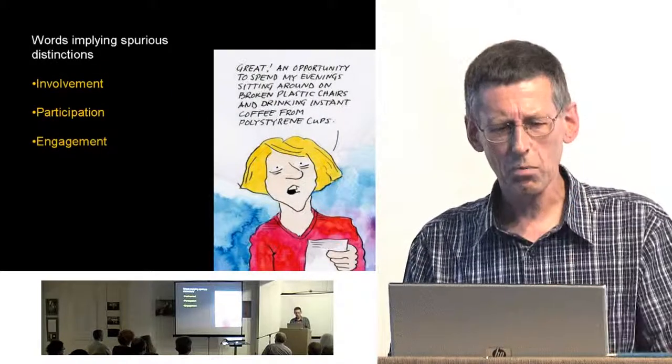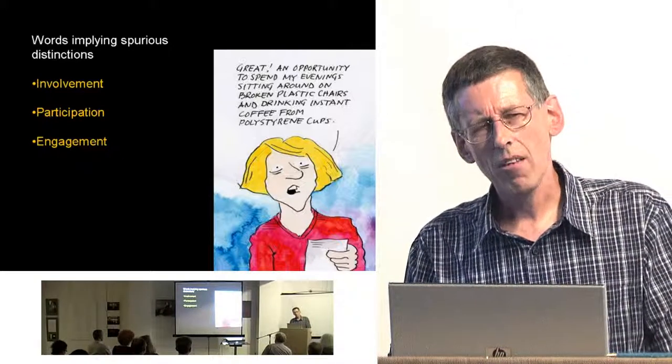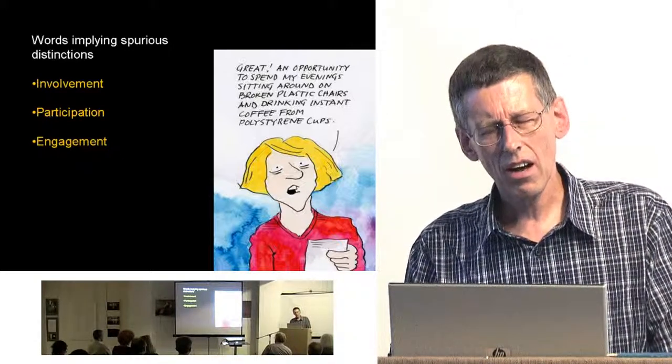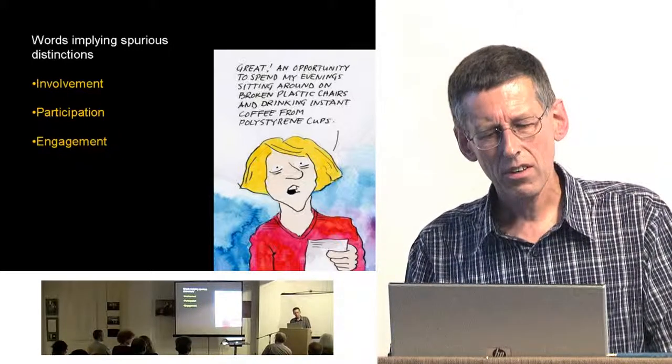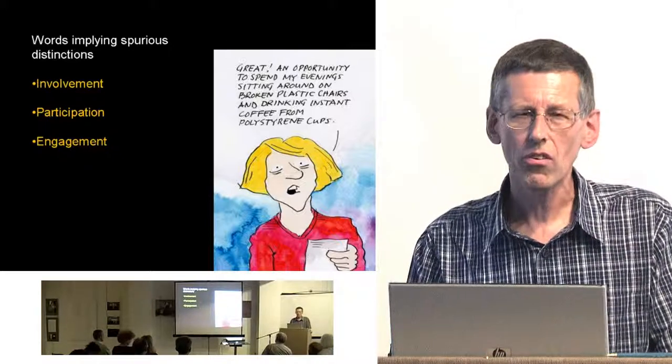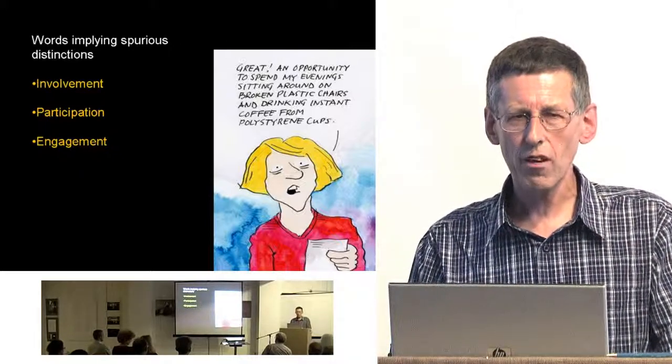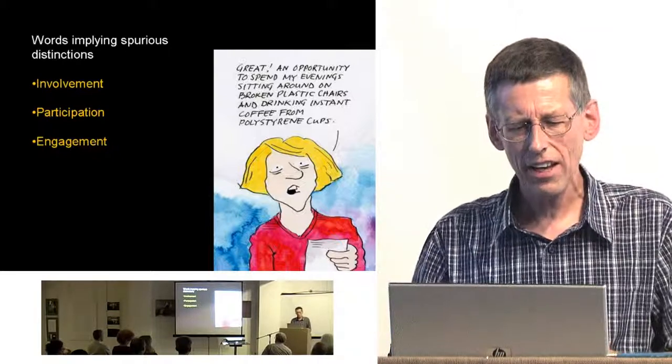Words implying spurious distinctions. The RTPI, five years ago now, decided that there was a lot of confusion about participation, involvement, and engagement, and they needed to define them. So they defined community involvement, community participation, community engagement. They said, these are all very different things, and unless we understand what the difference is, we'll confuse ourselves.